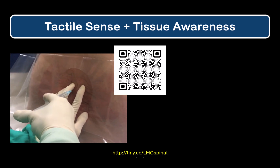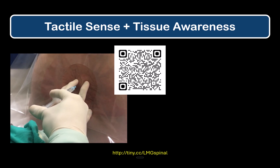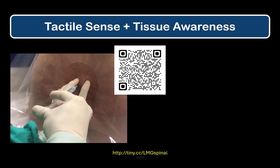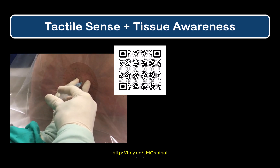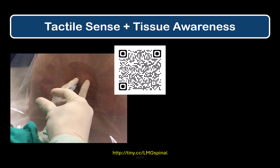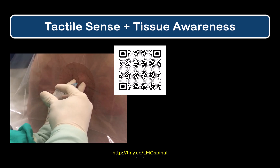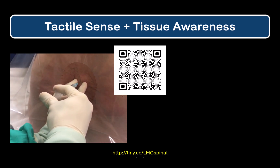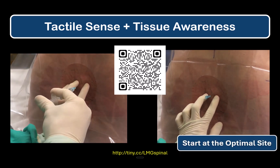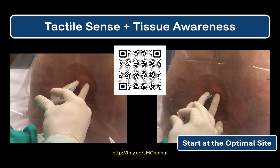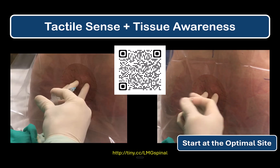I always start this process with my skin infiltration needle. I use this as a seeker to explore the superficial tissues. Unless the patient has very thick subcutaneous tissues, we can usually define the location of the spinous process, the interspinous space, and the midline through a combination of bony contact and resistance to fluid injection. And this sets us up to start our needle insertion with the introducer or spinal needle in the optimal site.